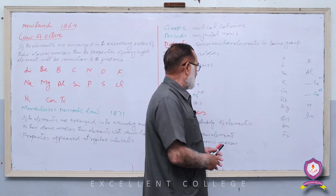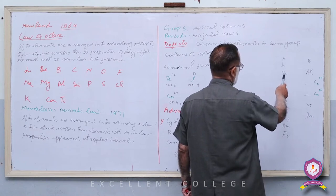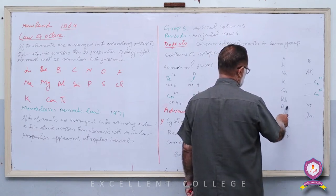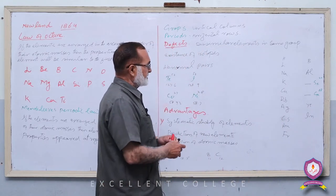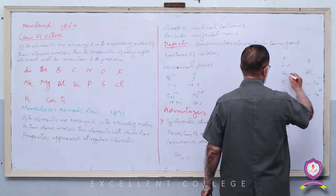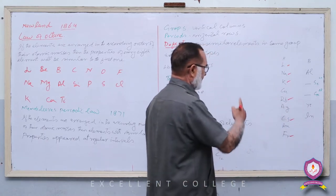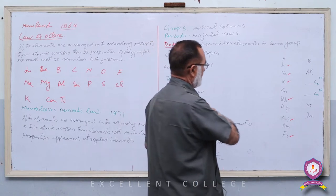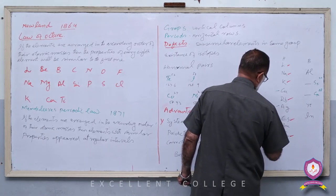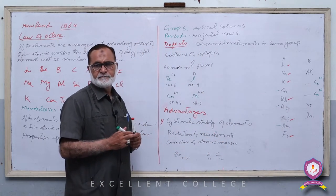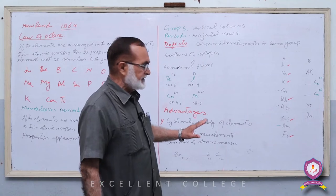Mendeleev کا first group دیکھتے ہیں: H, Li, Na, K, Cu, Rb, Ag, Cs, Au, Fr۔ Li, Na, K, Rb, Cs, Fr — Modern Periodic Table میں انہیں Alkali Metals کہتے ہیں — یہ بہت زیادہ reactive metals ہیں، free state میں نہیں پائی جاتیں، highly electropositive ہیں۔ جبکہ Cu, Ag, Au — یہ Least Reactive Metals ہیں، انہیں Coinage Metals کہتے ہیں کیونکہ پرانے زمانے میں ان کے سکے بنتے تھے۔